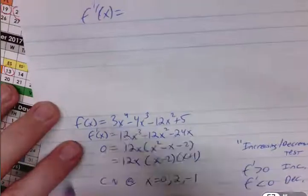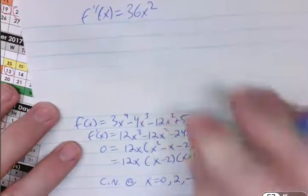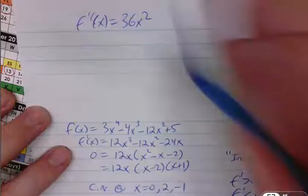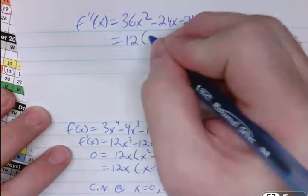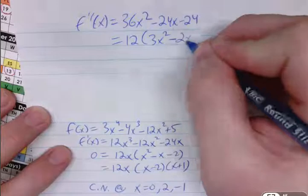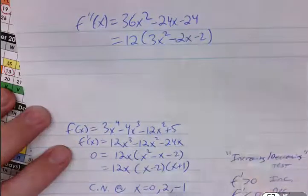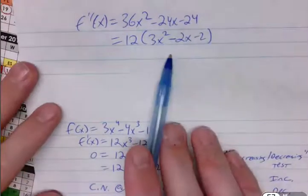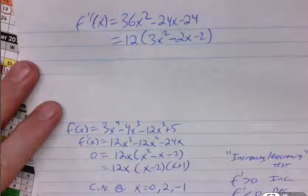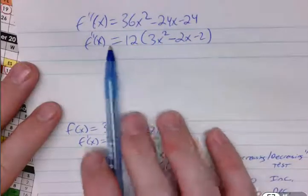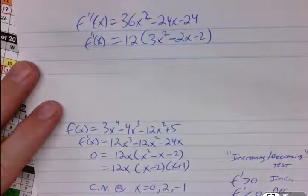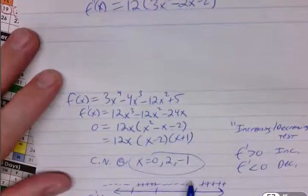So the second derivative is going to be 36x squared minus 24x minus 24. And let's just clean that up. Let's take out the 12. 3x squared minus 2x minus 2. This doesn't factor nicely, so I can't get easy critical numbers. But what I can do, if this is my f double prime, I can figure out the values at any particular point. For example, I know my critical numbers are 0, 2, and negative 1.